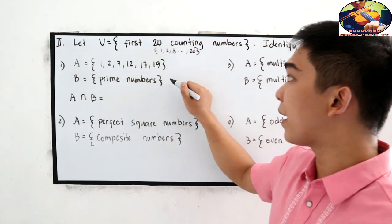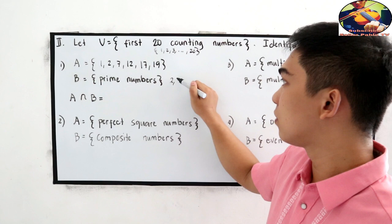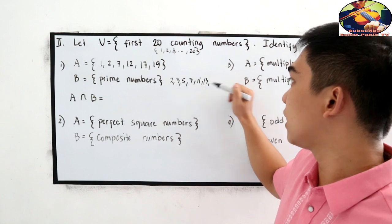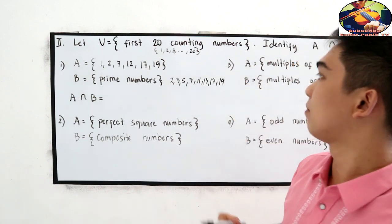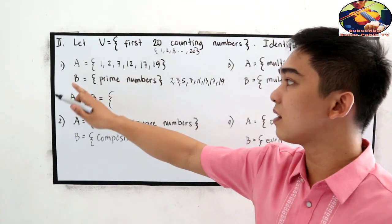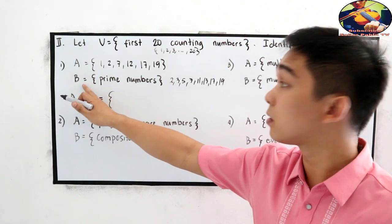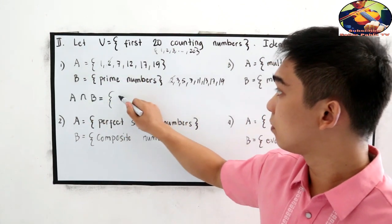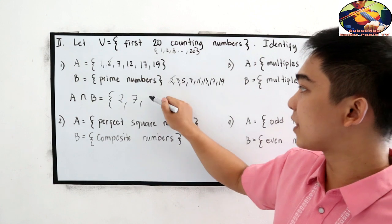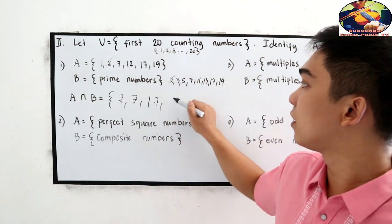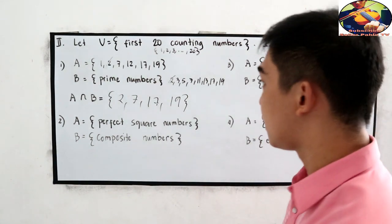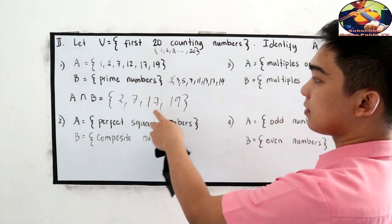So, from 1 to 20, our prime numbers are 2, 3, 5, 7, 11, 13, 17, 19. Now, what is the common in set A and set B? Get the common numbers. We have 2, 7, 17, and 19. So, A intersection B is equal to 2, 7, 17, and 19.